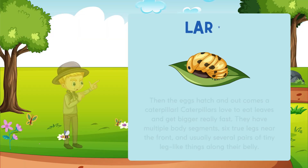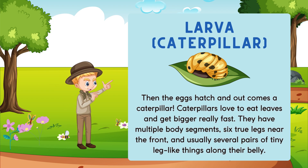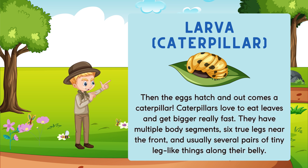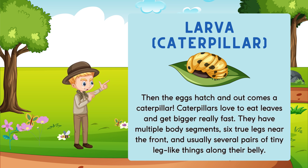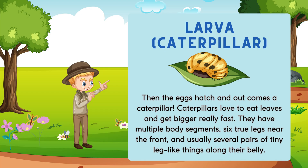Stage number two is larva, or caterpillar. In this stage the egg hatches and out comes a caterpillar. A caterpillar loves to eat leaves and gets bigger really fast. They have multiple body segments, six true legs near the front, and usually several pairs of tiny leg-like things along their belly.